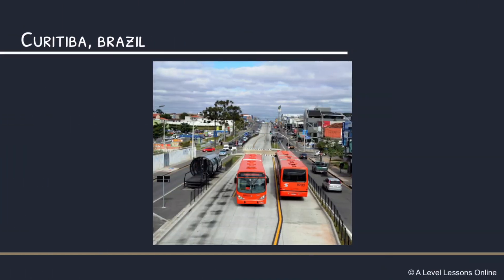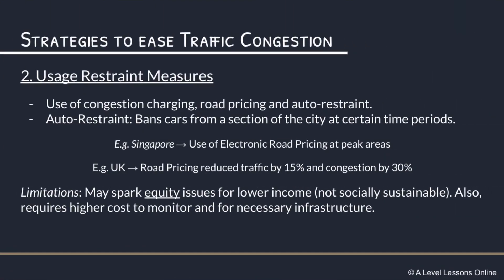This is what Curitiba looks like — they have specific bus lanes in the middle, running straight through, with bus stops positioned at the side. This is interesting because it shares space with where cars are, and cars only travel in two directions, making it very convenient and easy to drive around.